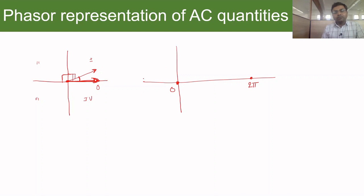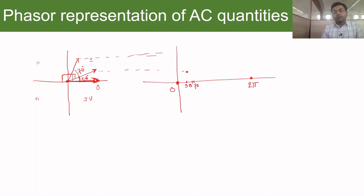At 30 degrees, we can read off the amplitude as a projection. At 70 degrees, the projection gives a larger magnitude. At 90 degrees, the phasor is vertical and we get the peak amplitude value.